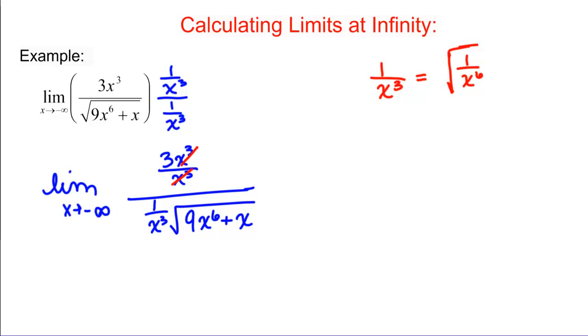But here's the problem. We're going to negative infinity, so that means we're plugging in negative numbers. If I plug a negative number into 1 over X cubed like negative 2, I get negative 1 eighth. If I plug negative 2 into the square root of 1 over X to the 6, negative 2 to the 6 is going to be an even number, so I'm going to have a square root of 1 over 64, which is 1 eighth.